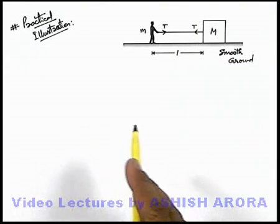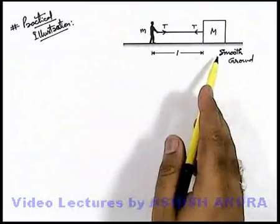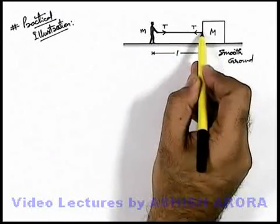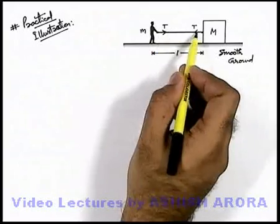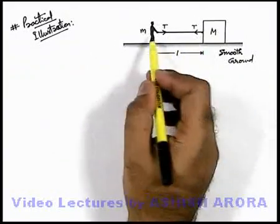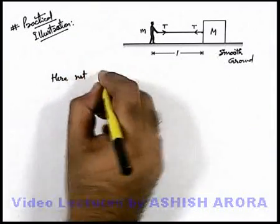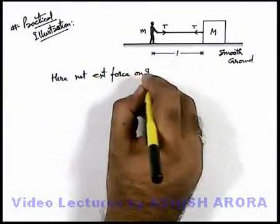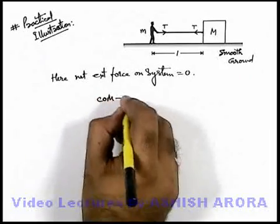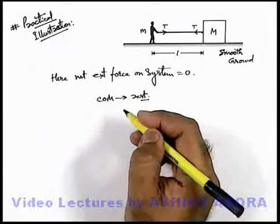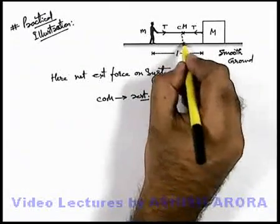Just to analyze the phenomena we have studied, let's analyze a practical situation in which a boy of mass small m is standing on a smooth ground and is holding a string which is connected at the other end with a large block of mass capital M. In this situation, when the boy pulls the string, a tension is developed which is equal and opposite on the two — the boy and the block — so the net force acting on the system is zero. Therefore, the net external force on the system is equal to zero, so the centre of mass will remain at rest. Because earlier the centre of mass was also at rest, the centre of mass will not be displaced with respect to the ground.